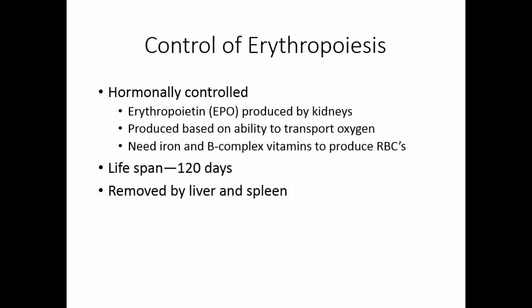Some hemoglobin will be broken down to bilirubin in the liver, and bilirubin will be excreted in the feces. If the liver is damaged, bilirubin may not be eliminated and may build up in the blood, causing the yellow pigmentation of the skin known as jaundice.